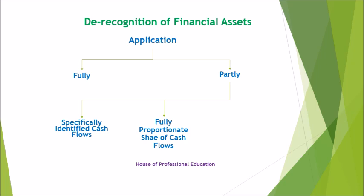If the arrangement gives the right to 90% of cash flows from a group of receivables but includes a guarantee to compensate the buyer for any credit losses up to 8% of the principal amount of the receivables, then de-recognition of the financial asset will also be in its entirety, not partly. Third, a fully proportionate pro-rata share of specifically identified cash flows — for example, when an entity enters into an arrangement whereby the counterparty obtains a right to a 90% share of interest cash flows from the financial asset.